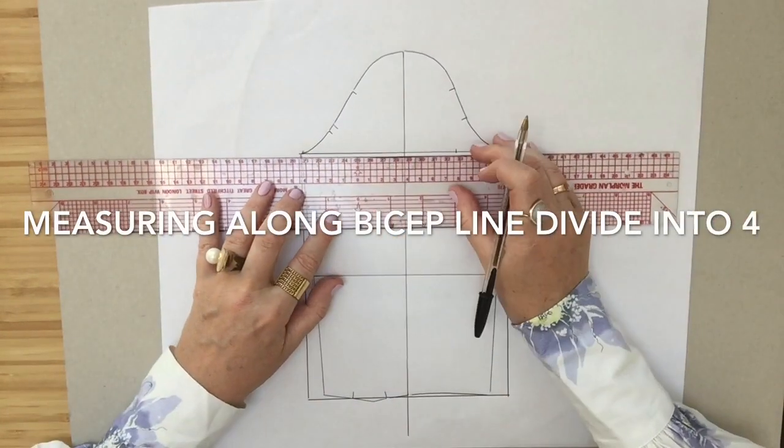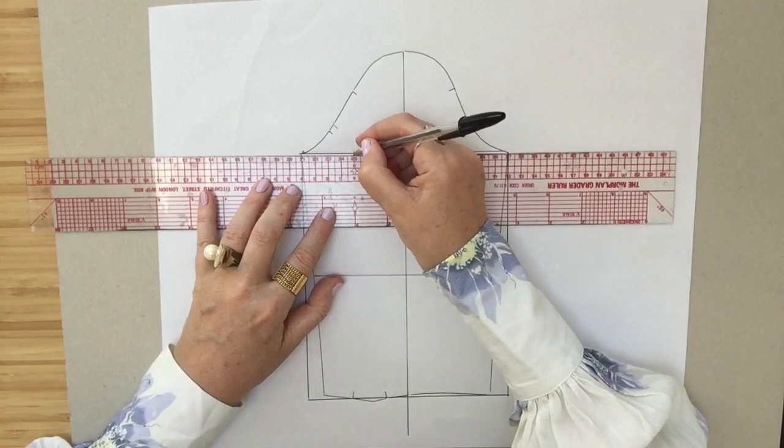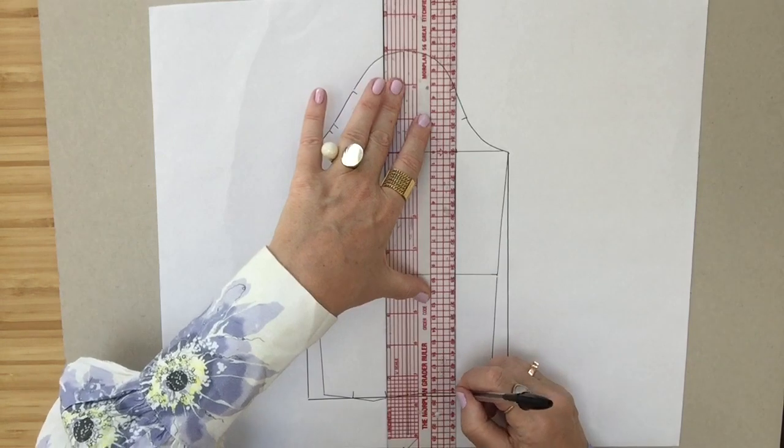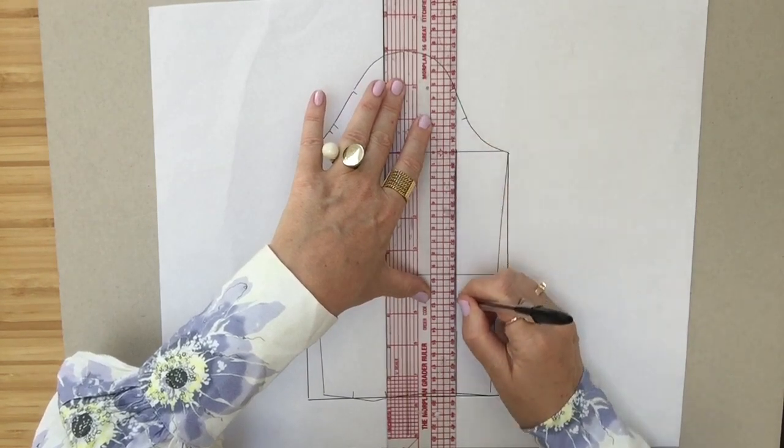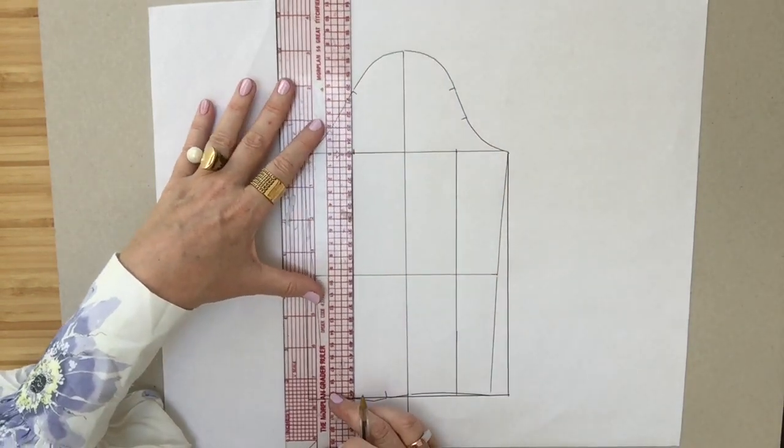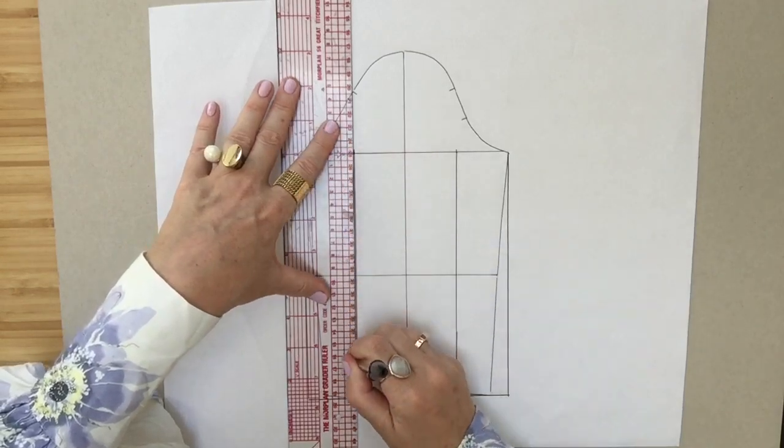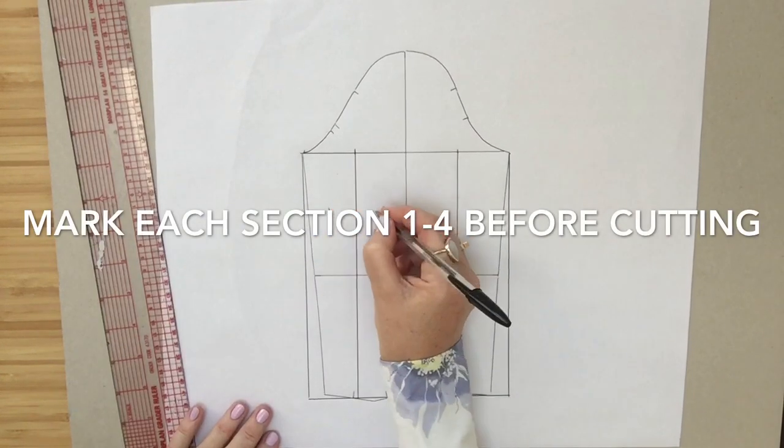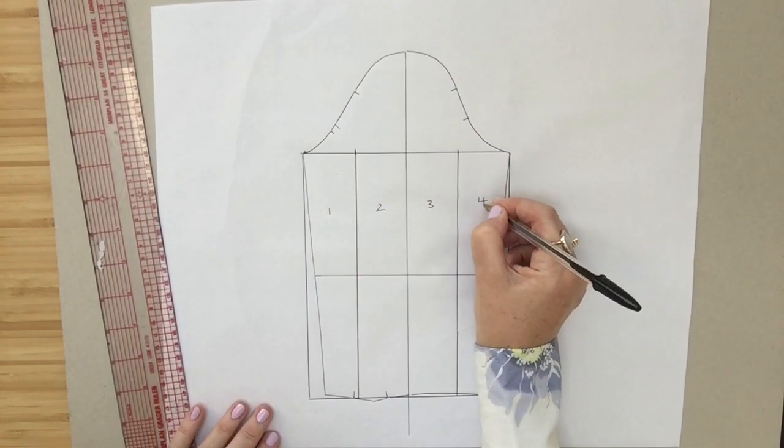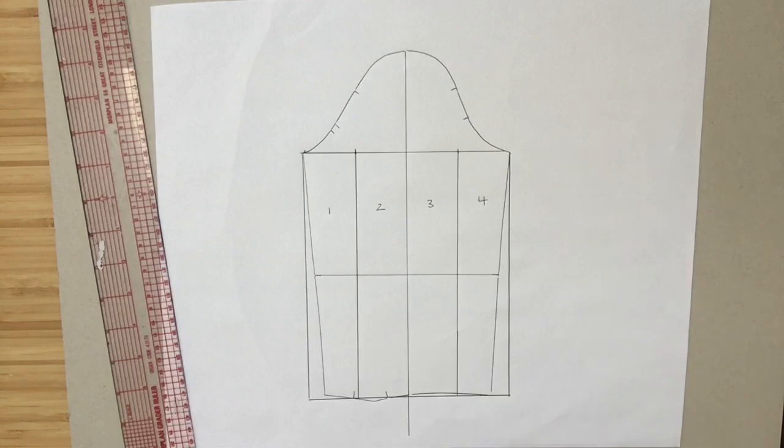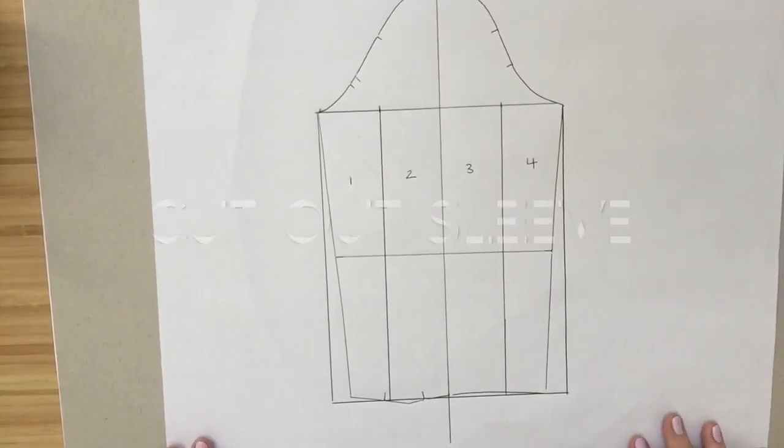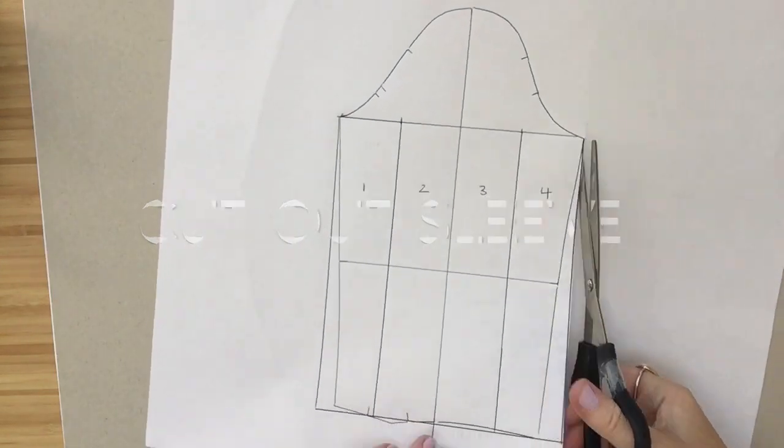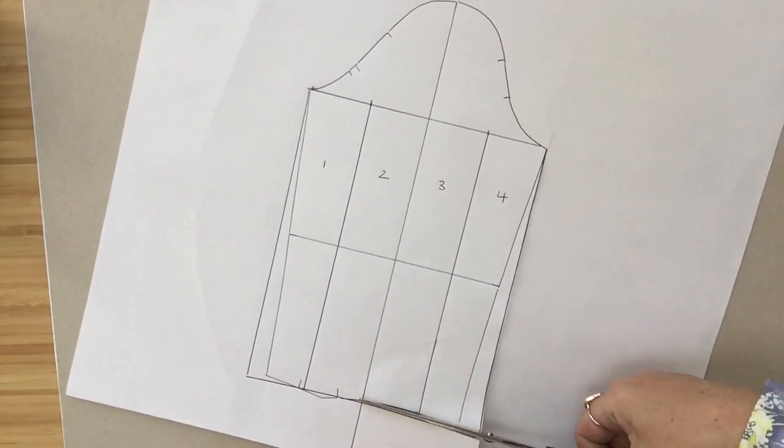Now I'm going to go to my bicep line and measure along that, and I'm going to divide the bottom of the sleeve into four sections. I'm going to square down from that bicep line down to the wrist line. Before I continue, I need to mark up the sections with numbers one to four. The reason for this is because when I cut it out later, it's very easy to get into trouble and do things upside down, so you kind of eliminate the problem by numbering them before you cut.